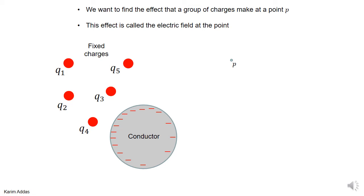I want to explain the idea of the electric field. Let's take a region of space where we put charges q1, q2, q3, q4, q5 — several charges fixed in space. In this example we also place a conductor with some extra negative charge on it. We then go to a point P in space and want to see what the effect of all these charges are at that point. Point P is empty — there's nothing there, it's completely empty.